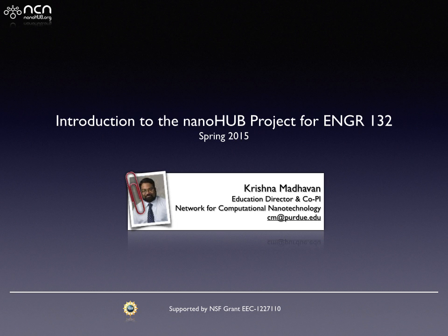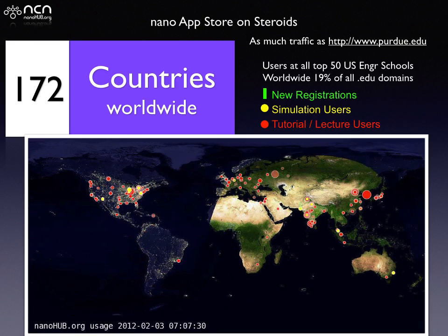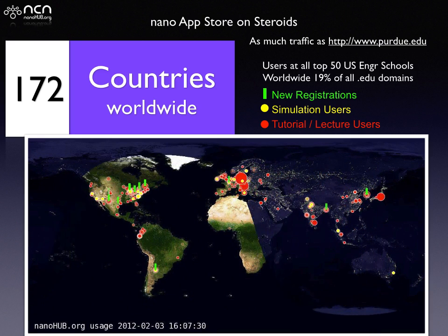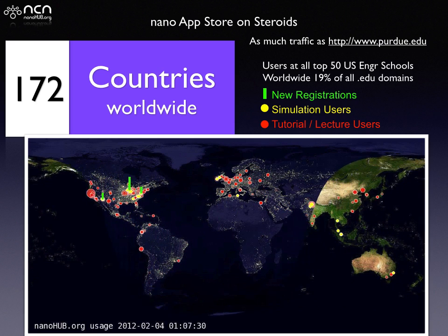To give you an idea of what Nanohub is, it is a global community of scientists and learners like you who want to learn about nanoscale modeling, simulation, and other cutting-edge research. We are in about 172 countries worldwide. Here on the graph you see that we have activity going on all over the world at any given time during a day.